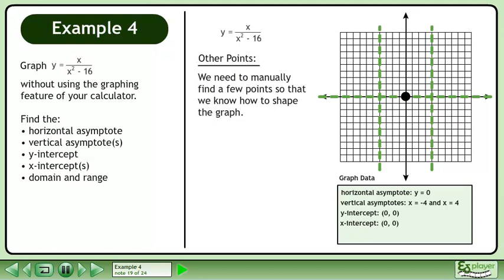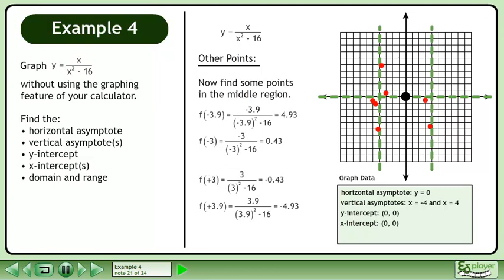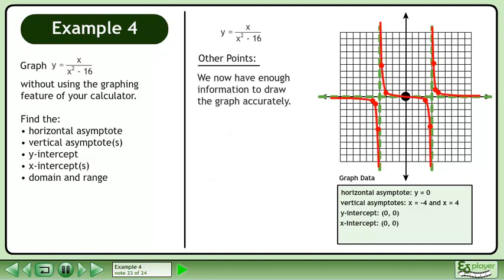Now we will find other points. We need to manually find a few points so that we know how to shape the graph. Find a few points in the left region. Now find some points in the middle region. Finally, find some points in the right region. We now have enough information to draw the graph accurately.